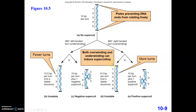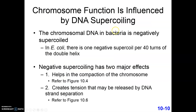In the bacterial chromosome, it is negatively supercoiled in order to compact the size. We know that the DNA binding proteins forming the loop structures give us about a 10-fold compaction. The next additional 100-fold compaction is achieved through negative supercoiling, and it is specifically negative supercoiling. In E. coli, there is about one negative supercoil per every 40 turns of the double helix.